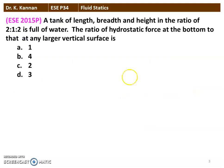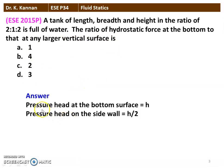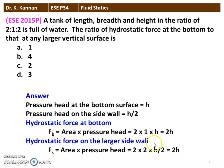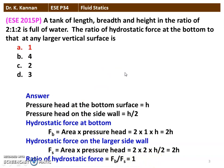The second question from the 2015 question paper: a tank of length, breadth, and height in the ratio 2:1:2 is full of water. The ratio of hydrostatic force at the bottom to that at any larger vertical surface is to be found. The pressure head at the bottom is h, and at the side wall is h/2. The hydrostatic force at the bottom Fb = area × pressure head = 2×1×h = 2h. The hydrostatic force at the larger side wall Fs = area × pressure head = 2×2×(h/2) = 2h. The ratio equals 1, so option A is the correct answer.